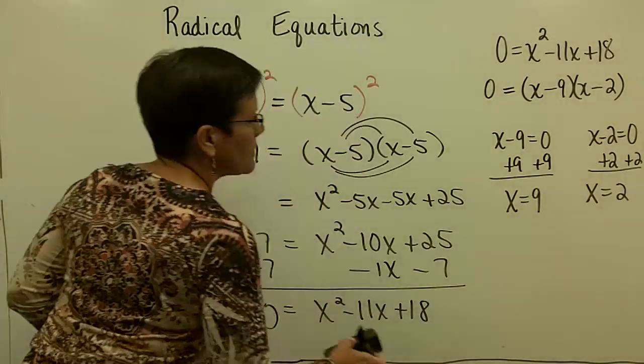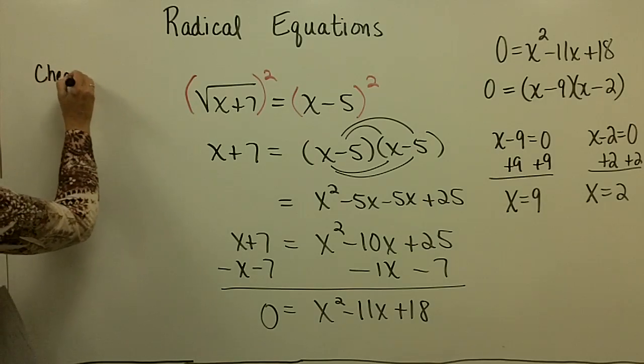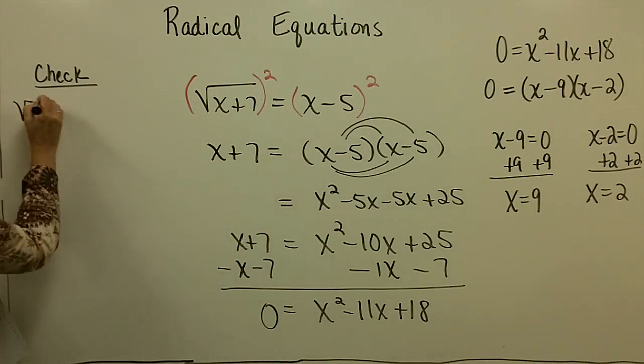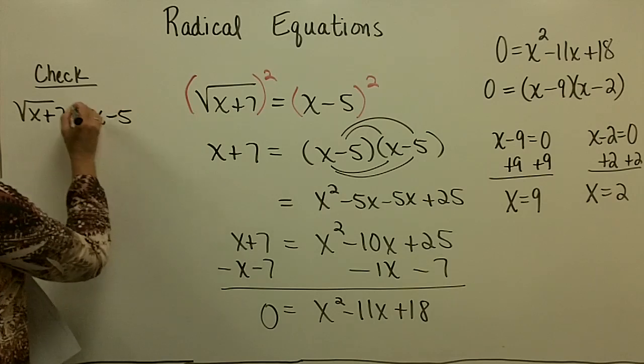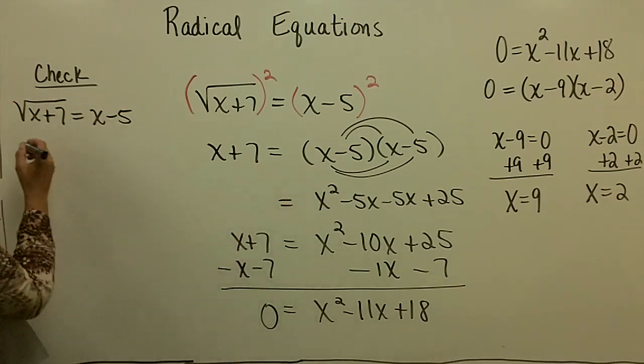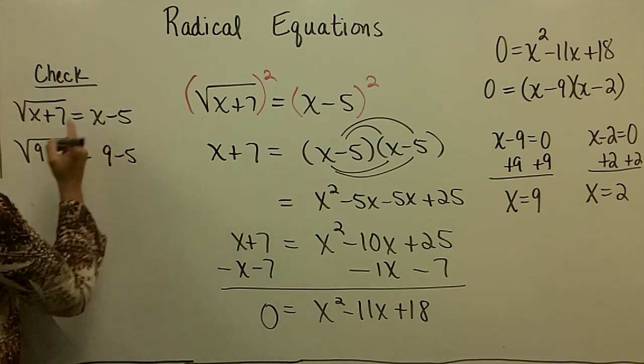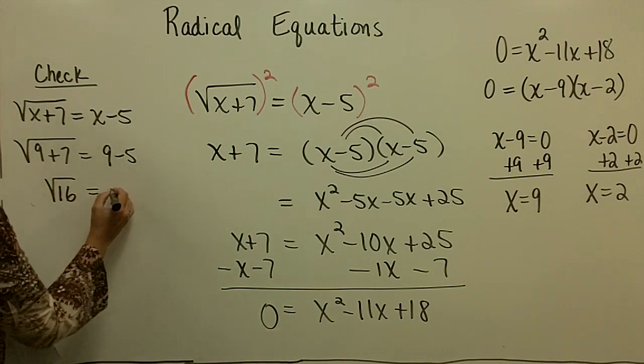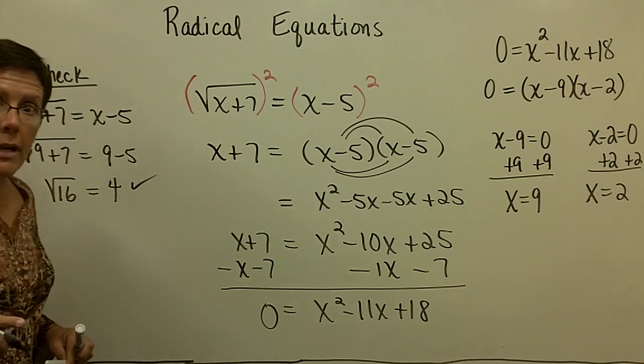Or, actually in this case, on the right side of the equation. So you really should, must, absolutely do the check in the original equation, which read the square root of x plus 7 equals x minus 5. So one of my answers was a 9. So I'm going to put a 9 in here for x. And then a 9 in here for x. And 9 plus 7 is 16, which square root of 16 is 4. And 9 minus 5 is 4. And that one checks just fine.